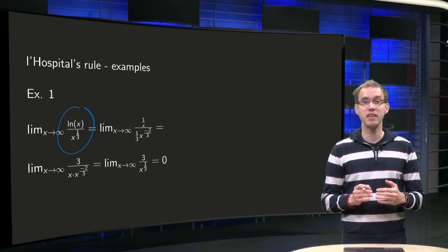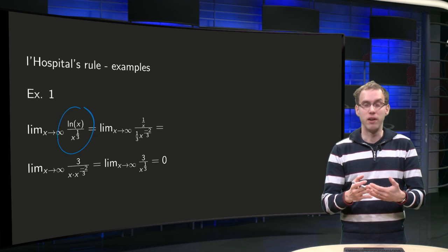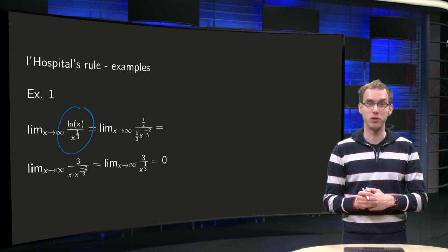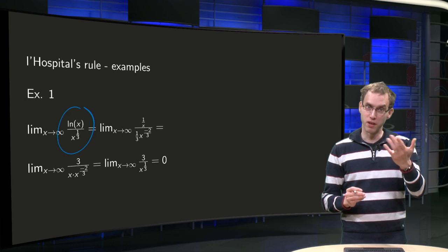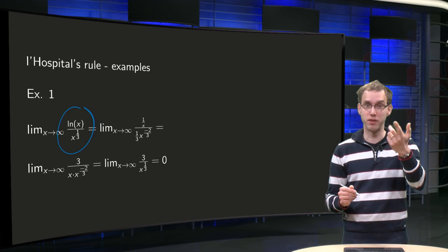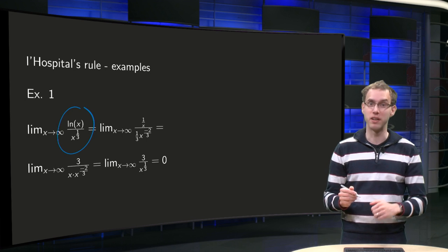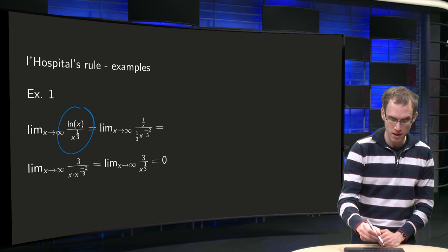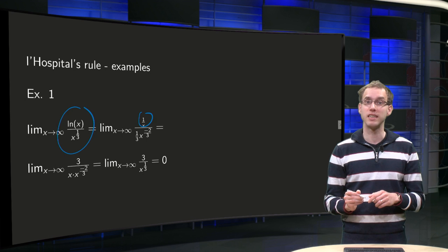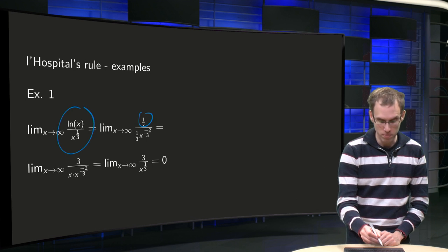We see infinity over infinity. With our normal limit rules there is nothing we can do, but fortunately we have L'Hopital's rule. So if we have infinity over infinity, we can take the derivative of the numerator divided by the derivative of the denominator. So 1 over x, and the derivative of the denominator equals 1/3 x to the power minus 2/3.